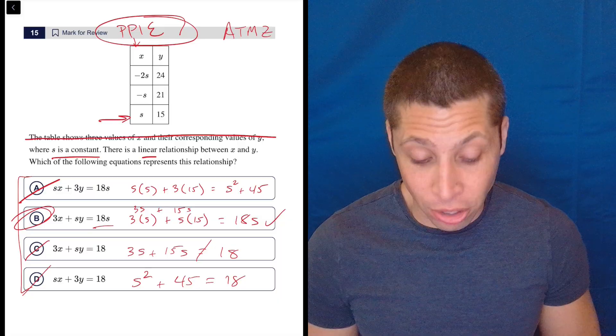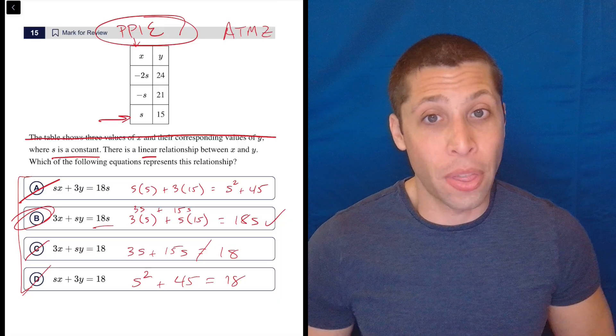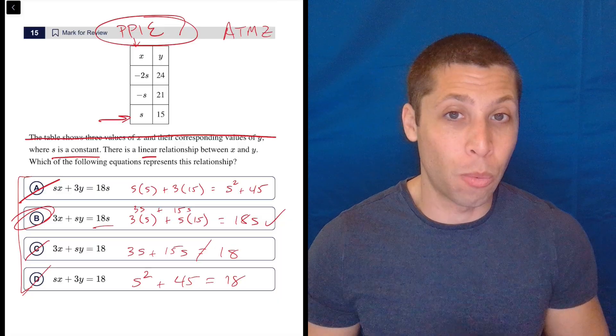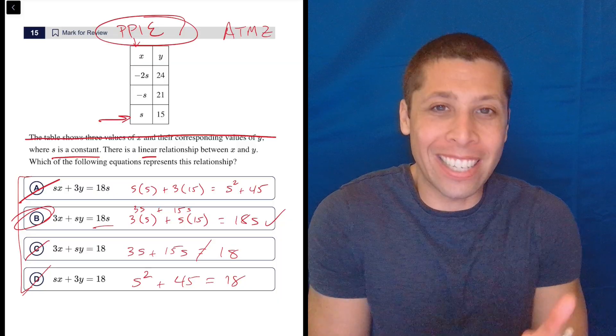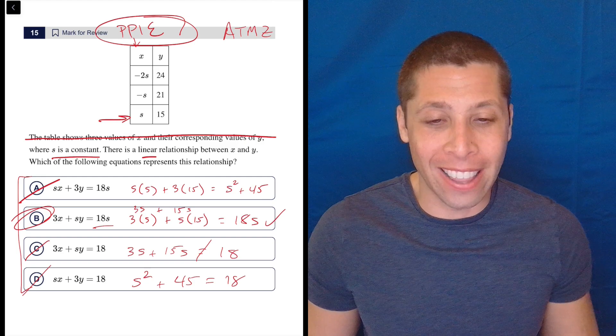I should have just trusted the strategy. I have points, I have equations, let me plug them in. Let me see if certain things go away. And then if I need to do more work because there's multiple answers left over, then I'll do it. But sometimes you don't need to. Sometimes you just get down to one answer in a very simple way, and that's awesome.